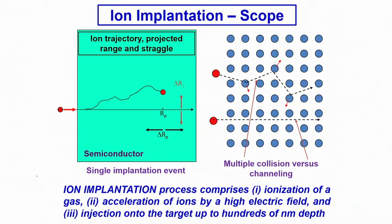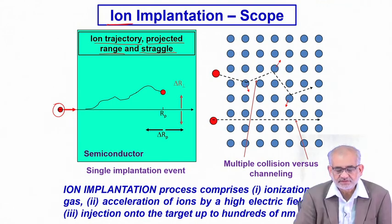The process is ion implantation and as the name suggests we are talking about implanting or introducing new species — ions — onto the substrate surface. While we introduce new species, we have to worry about the trajectory that the incoming ion takes while entering into the surface, the range, the projected range to which it actually goes inside, and the straggle — the spread — that it encounters during the process of entering into the surface.